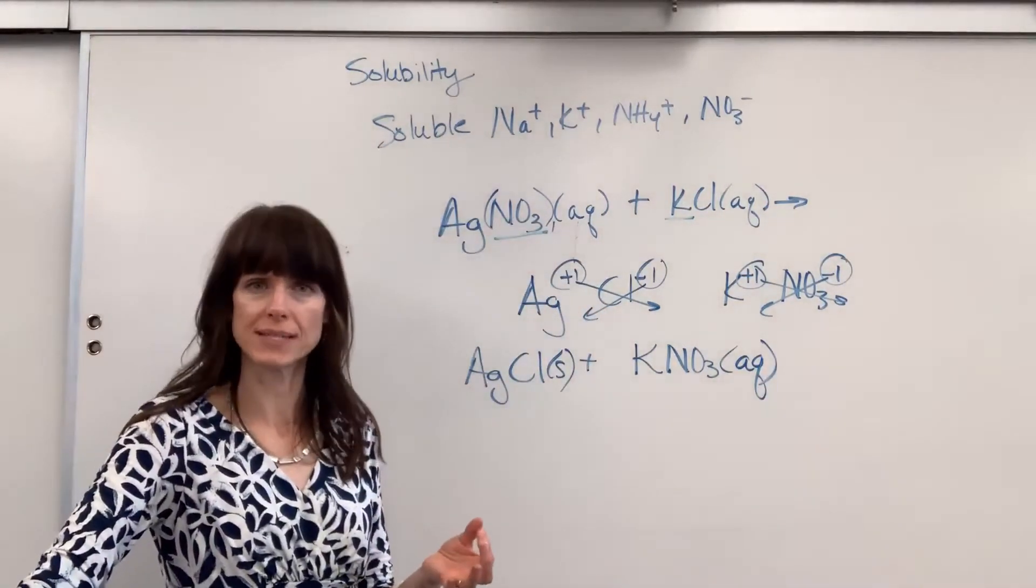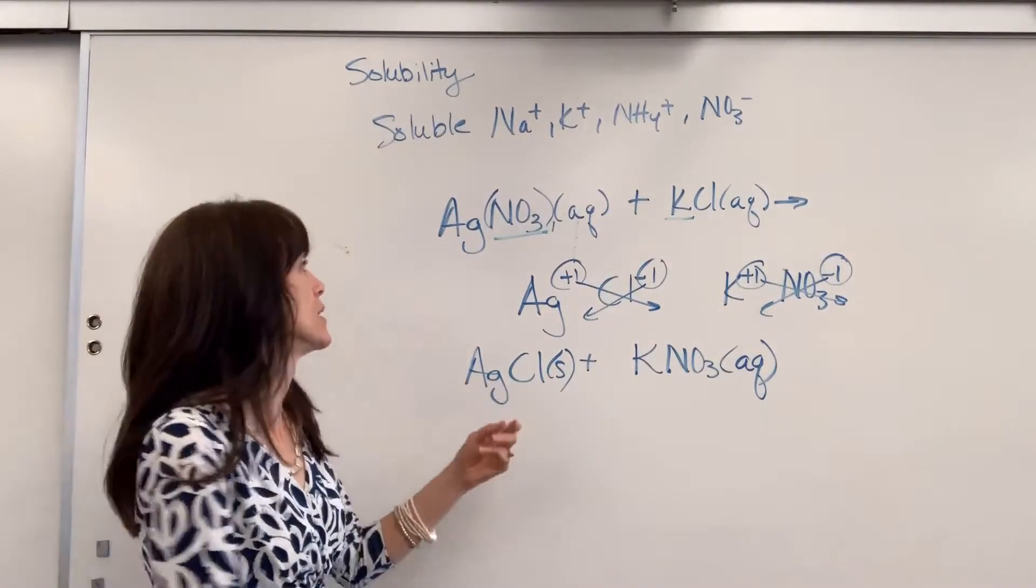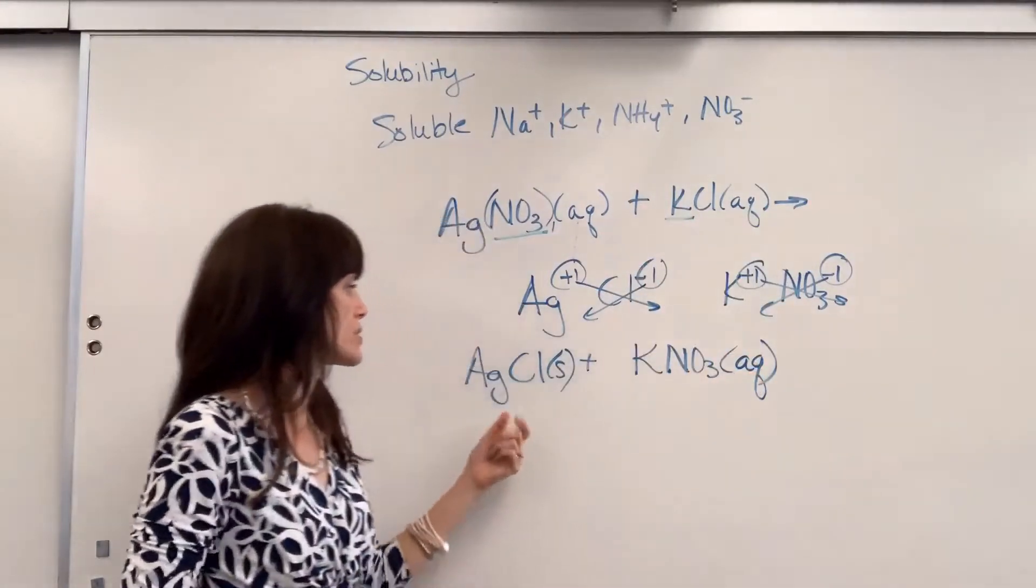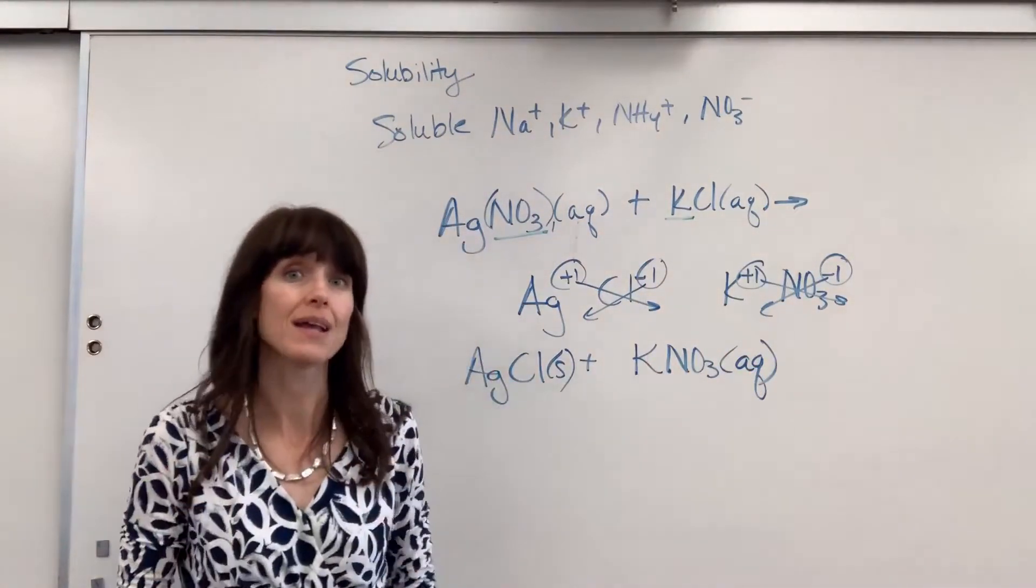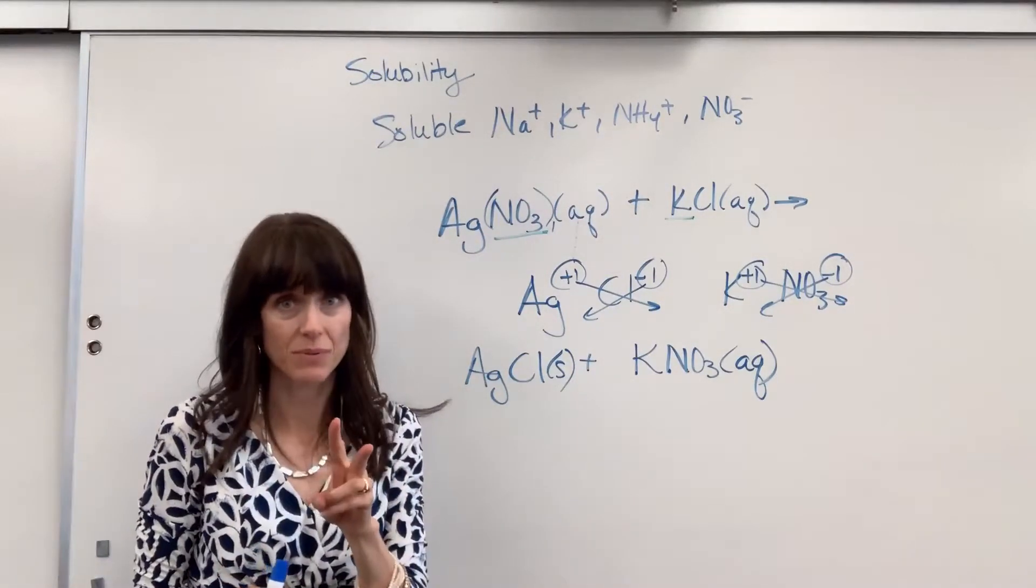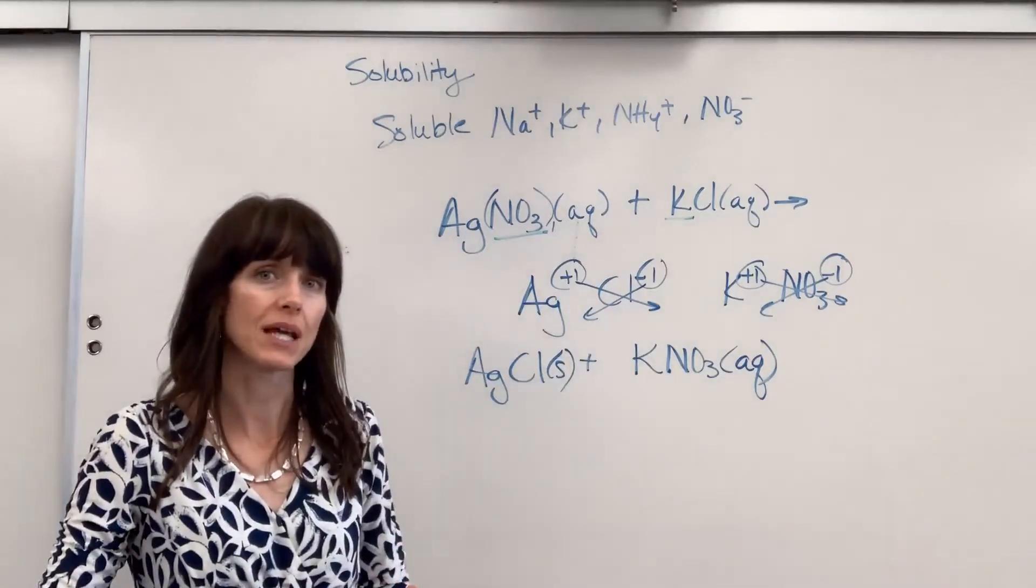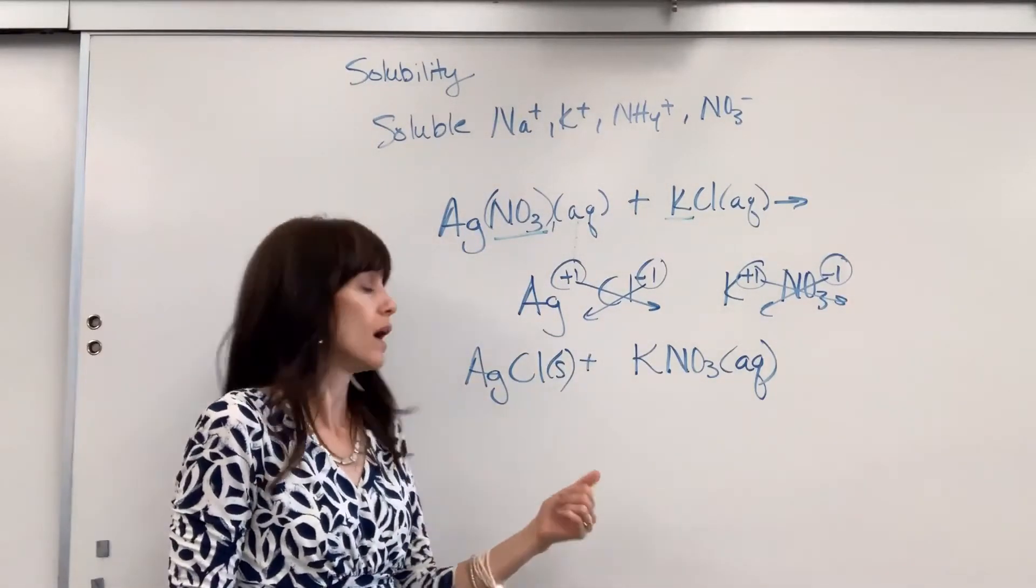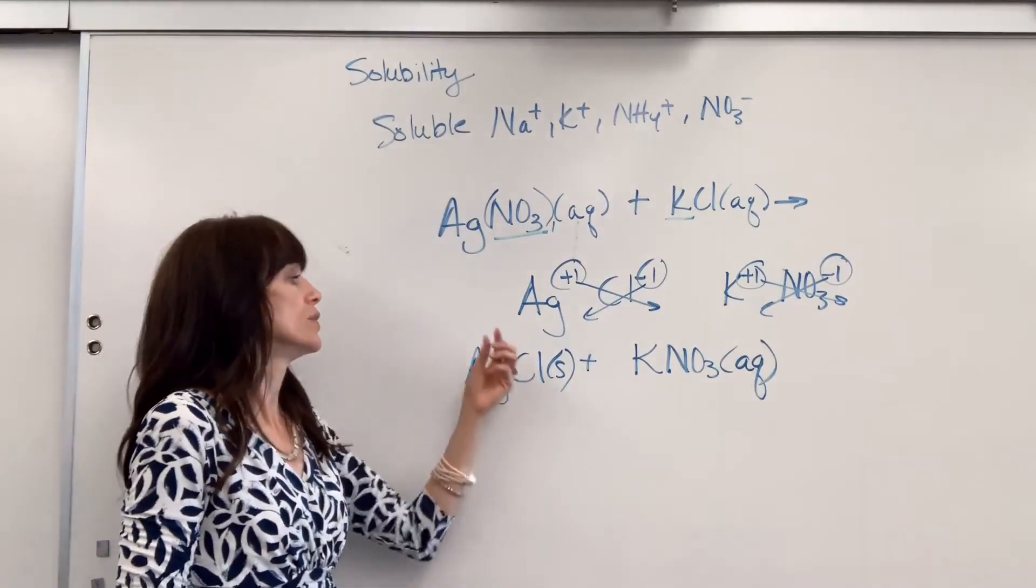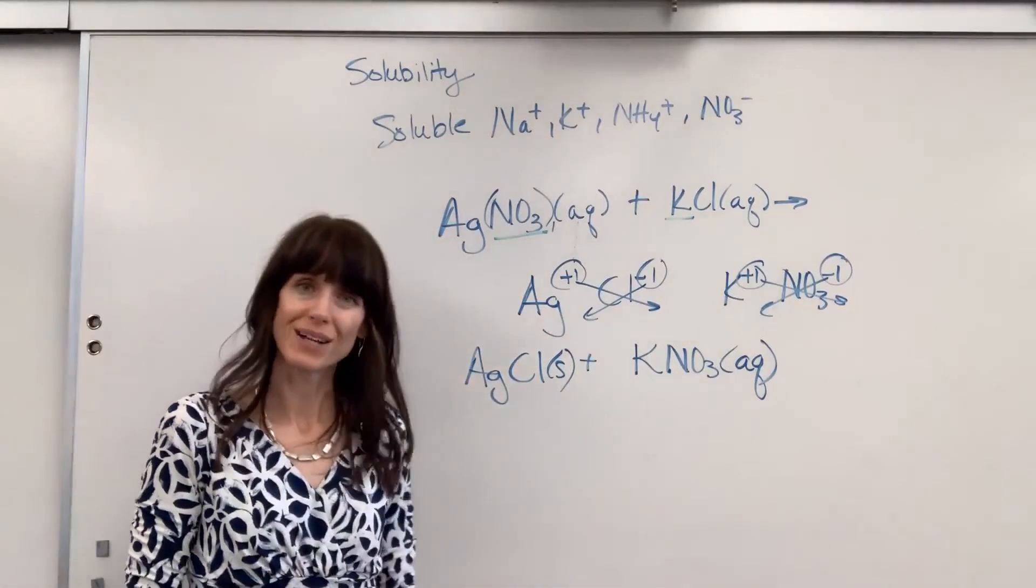So I want to review these steps with you. When we are predicting products, you're going to switch the metals. Always go to the ions, cross down those charges to make sure that you get the right chemical formula. Then, second step, you have to evaluate from a solubility table. What's the phase? If they're soluble, you write aqueous. If they're insoluble, you write solid. So there's a discussion on solubility.